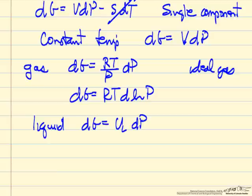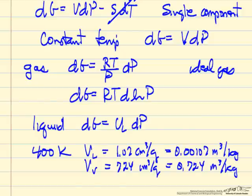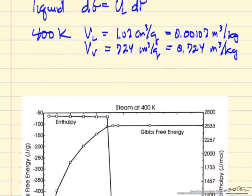Remember the volume of the liquid is much smaller than the volume of the vapor. And so we were looking at water and steam. So let's look at 400 Kelvin, the volume of the liquid. From steam tables, the volume of the liquid and the volume of the vapor. You can see there's a factor of 700, more than 700 between the two. And so when we look at this term, we can see that Gibbs free energy is not going to change very much for the liquid when we change the pressure. But it does for the vapor.